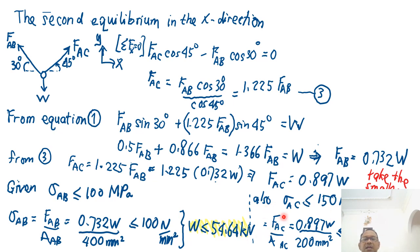From equation 3, I also know that FAC equals to 1.225 FAB. So I can now substitute FAB equals to 0.732W. And therefore, FAC equals to 0.897W. What else do I need to know? So I can now use the relationship between stress AB given. So that is the inequality. Sigma AB must be less or equal to 100 MPa. By definition, sigma AB equals to force AB divided by area of AB. And area of AB is given by 400 mm square. Sigma AB is given by 100 N per mm square. And FAB equals to 0.732W. And therefore I get W must be less than 54.64 kN.